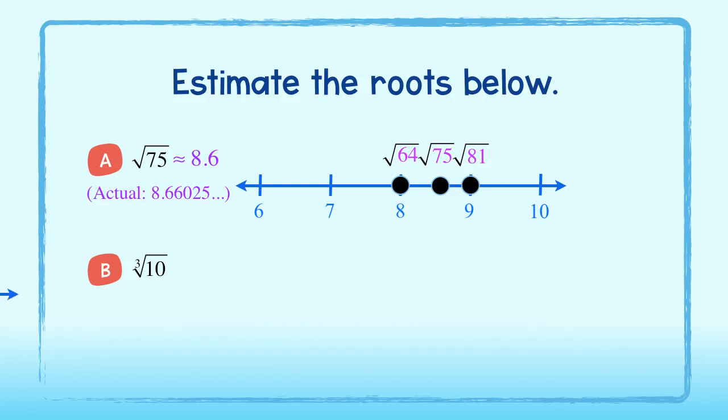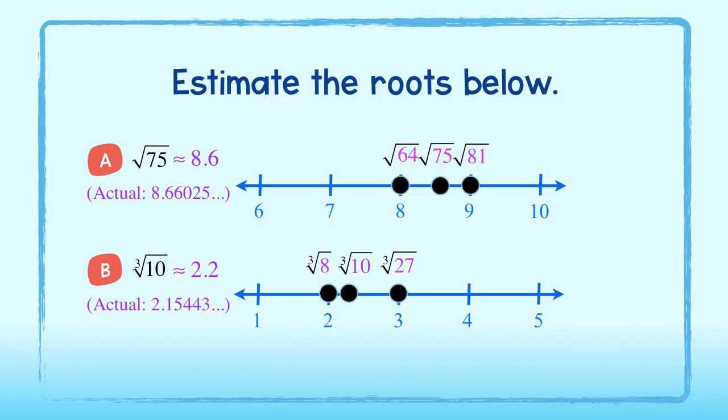The cube root of 10 lies between 2 and 3 on a number line. My estimate is 2.2. The actual value is 2.15443 and so on. If you are close to this, then you are on the right track.